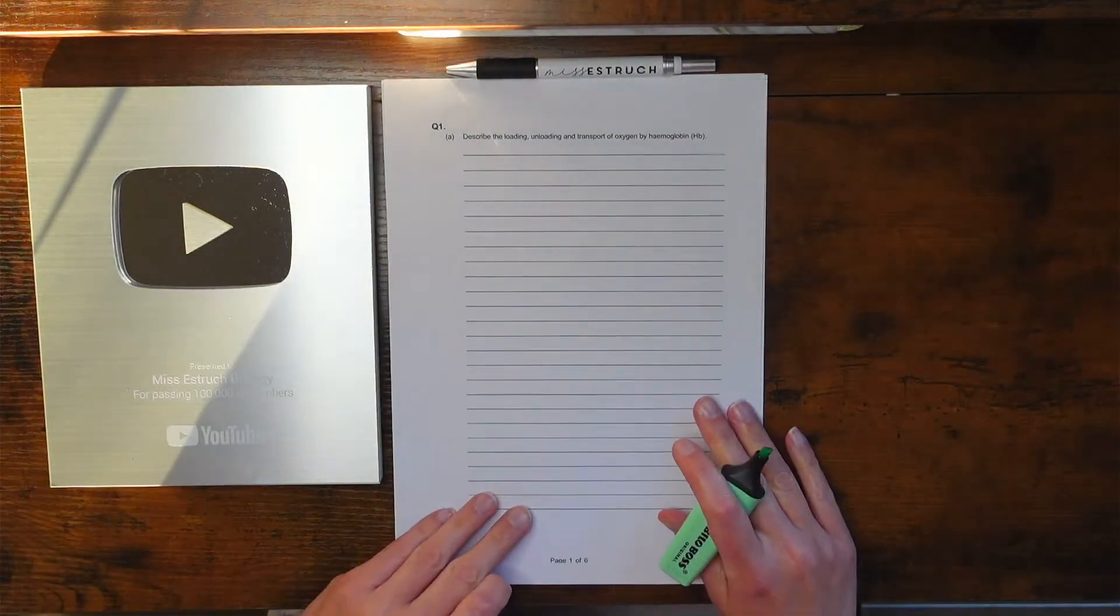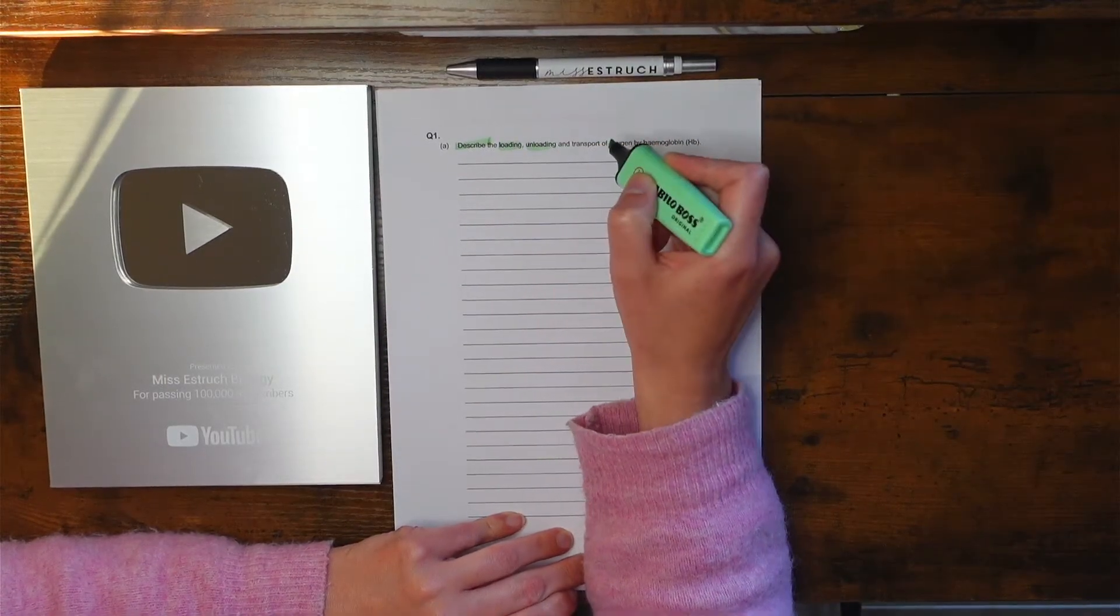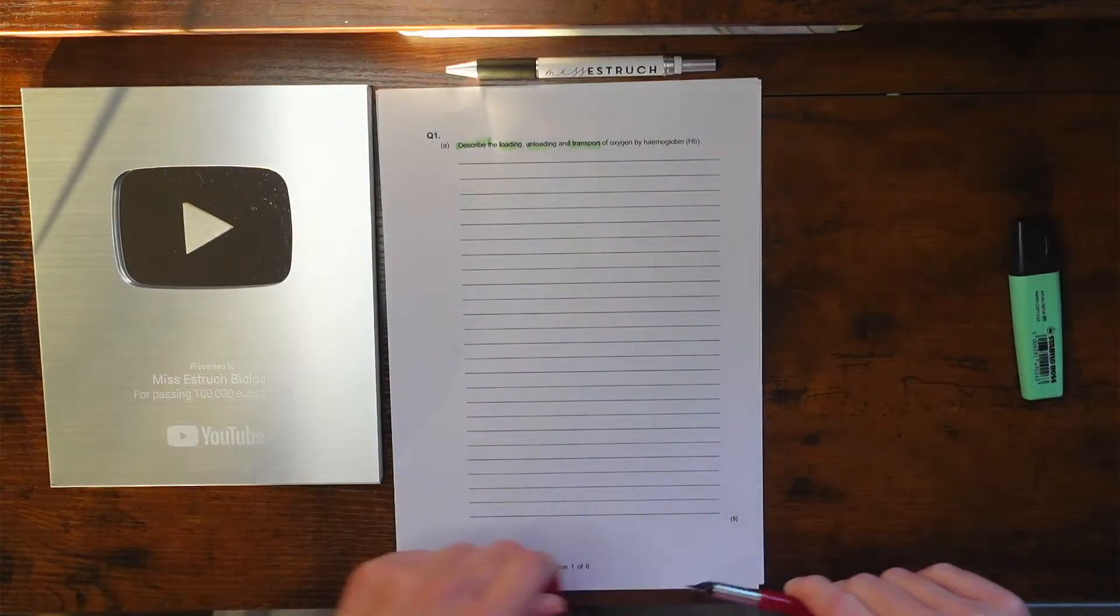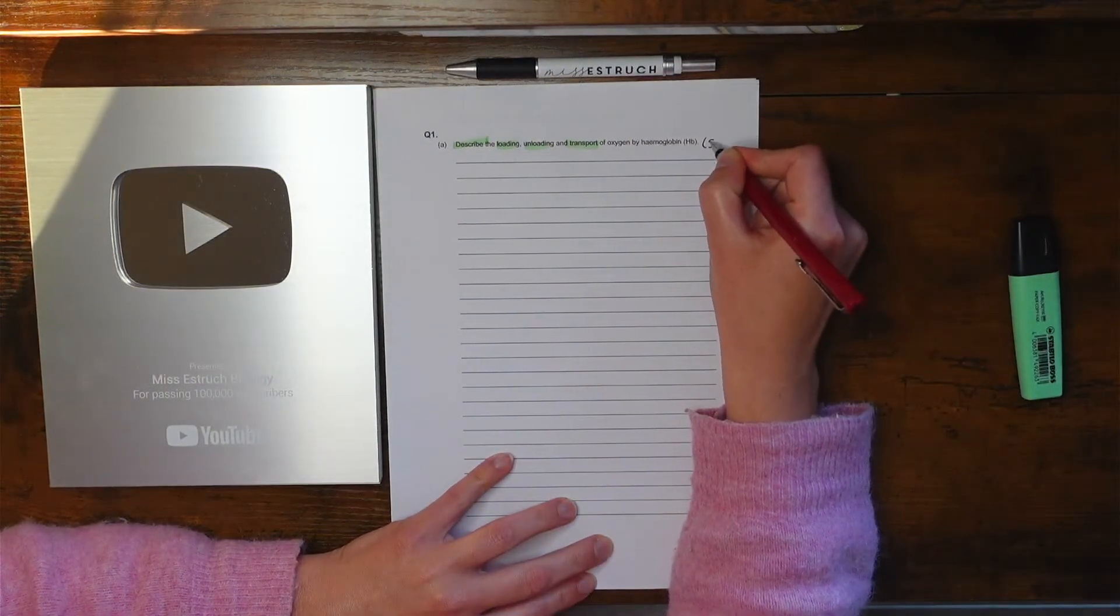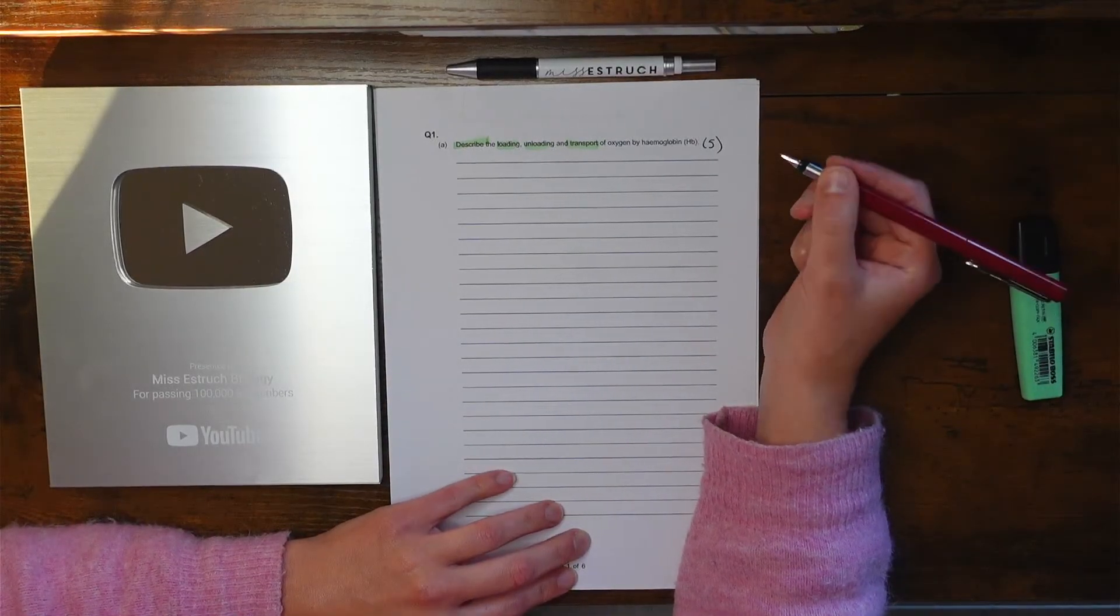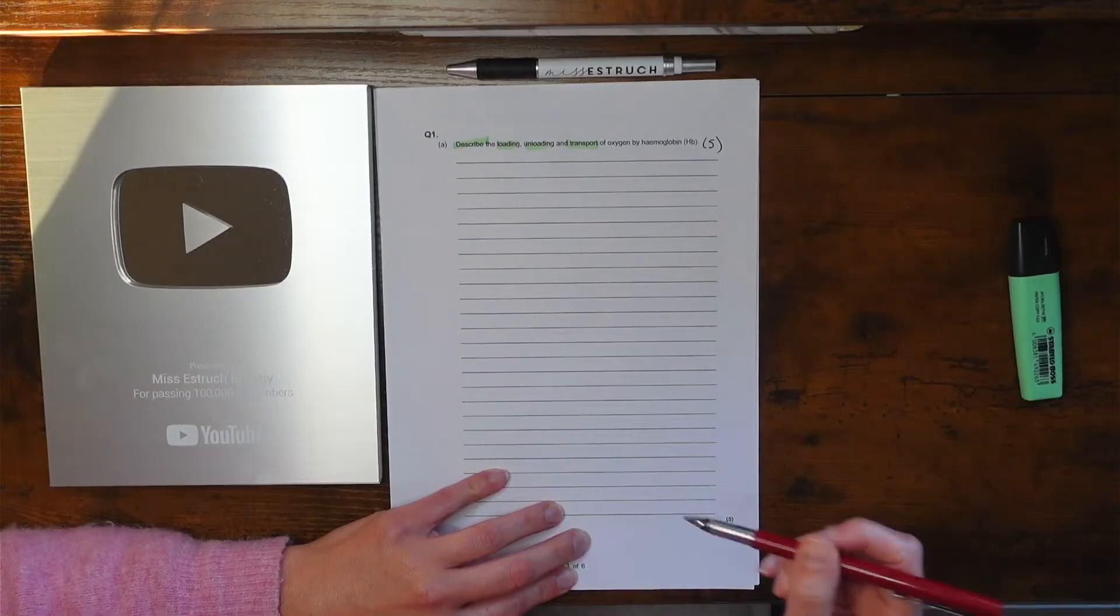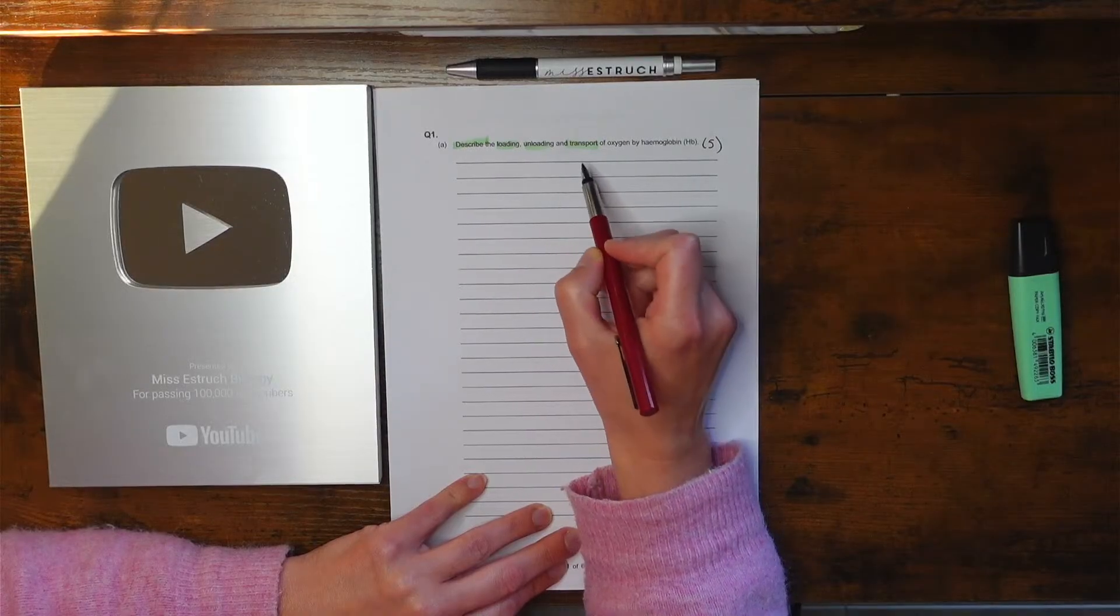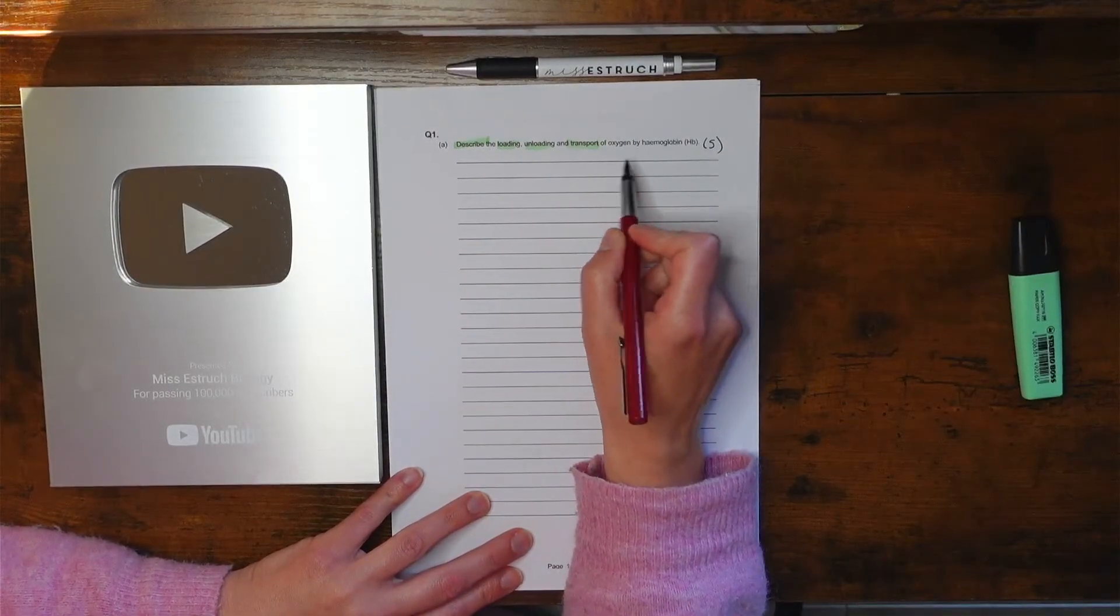So first one that I have is: describe the loading, unloading and transport of oxygen by hemoglobin. So I'm going to split this, it's actually five marks, I don't know if you can quite see that down here at the bottom, but it is a five marker. You can bullet point all of your questions for AQA biology, so I do highly recommend it because it makes it so much easier. And this is a five marker so I already know I'm probably going to go for something like two marks on loading, two marks on unloading, two marks on transport.